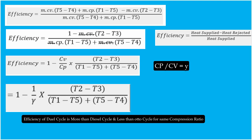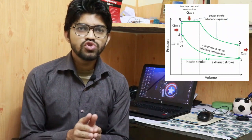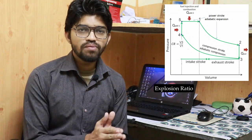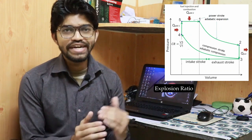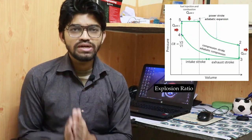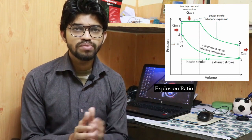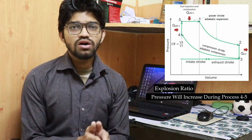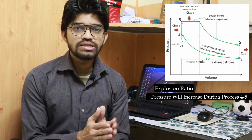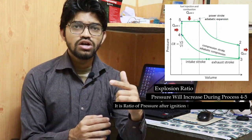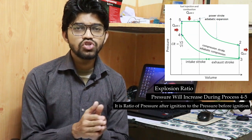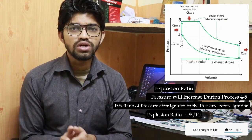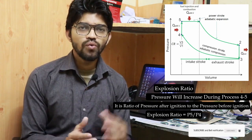Now let's look at the explosion ratio in the dual cycle. During process 4 to 5, the constant volume heating process, the piston remains at top dead center, fuel enters the combustion chamber, and pressure increases. The explosion ratio is defined as the ratio of pressure after ignition to pressure before ignition — that is, p5/p4. This is the explosion ratio in the dual cycle.